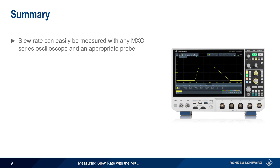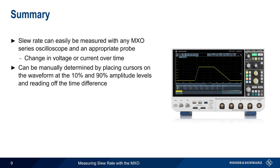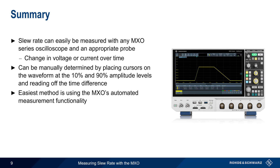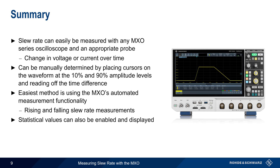Let's end with a brief summary. Slew rate is very easy to measure using any MXO series oscilloscope and an appropriate voltage or current probe. Recall that slew rate is defined as the rate of change in a voltage or current over time. One way to measure slew rate is to manually place cursors on the acquired waveform at the 10% and 90% amplitude levels and look at the time difference between these points. However, the easiest and most accurate method is using the MXO's automated measurement functionality, which supports both rising and falling slew rate measurements. In addition, using the automated measurement allows statistical values such as min, max, mean, etc. to be calculated and displayed over multiple acquisitions.